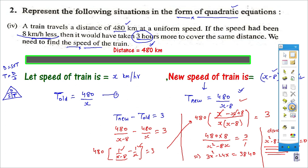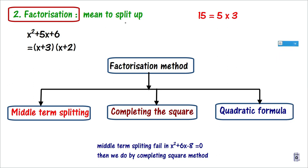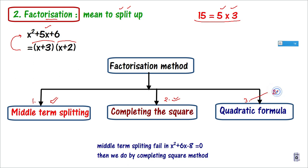With this, our first exercise is complete. Now let's talk about factorization. Factorization means to split up or break up. For numbers: 15 = 5 × 3. For quadratics, a degree-2 expression breaks into 2 brackets. In our chapter there are three methods: first, middle term splitting method; second, completing the square method — which is new in 10th standard; and third, the quadratic formula — the best method.